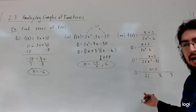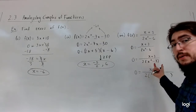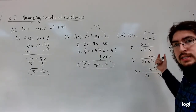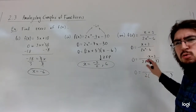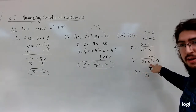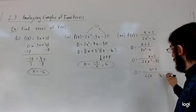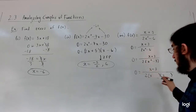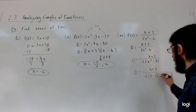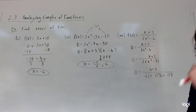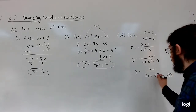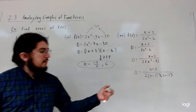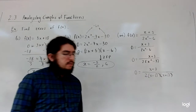So x squared minus 3 factors as x minus radical 3 times x plus radical 3, because x squared minus a number squared is a difference of squares. You square root each term: square root of x squared is x, and square root of 3 is radical 3, with one sign negative and one positive. If you FOIL it out, you'll get exactly that expression back.